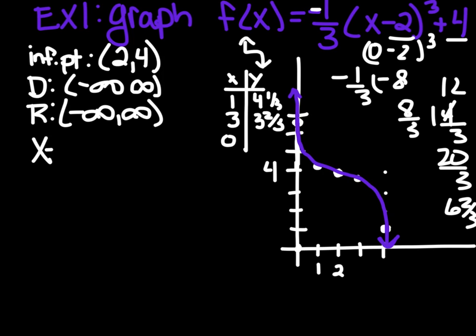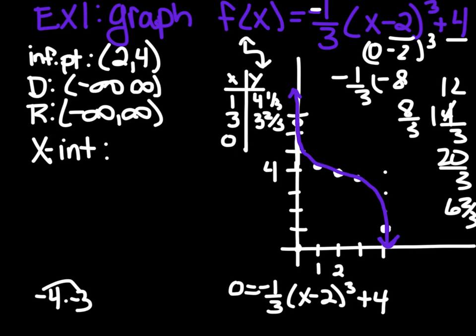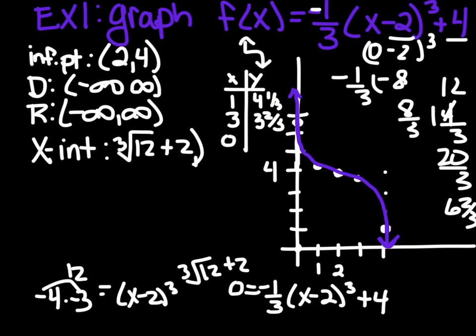If I wanted the x-intercept, where does it cross the x-axis? I would have to plug a zero in for y. So to find the x-intercept, we'd have to say 0 = -1/3(x-2)³ + 4. So see, this is where that skill comes in of solving. We're going to need to subtract 4, put it over here, multiply it by -3, we get 12. 12 = (x-2)³. So we're going to take the cube root of 12. It's not plus or minus. And then we're going to add 2. So the x-intercept is the cubed root of 12 plus 2, like that, comma 0.